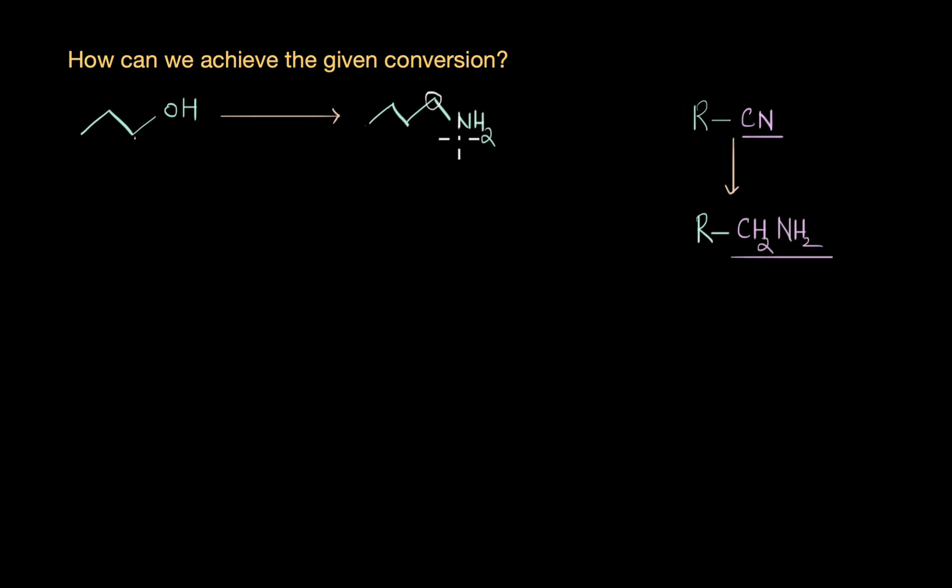So the question is how do we convert our OH to RCN so that we can eventually convert this to our CH2NH2 and get this step-up reaction. The answer to that is simple nucleophilic substitution. Let's try and convert this alcohol to another species which has a much better leaving group, and then use a substitution reaction to introduce a CN group.